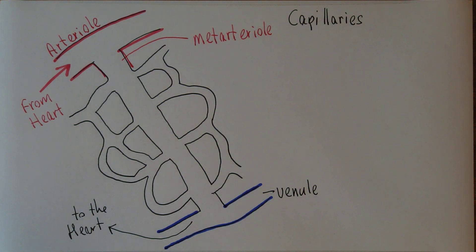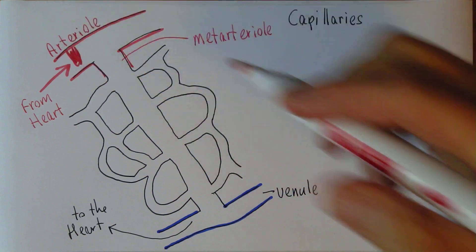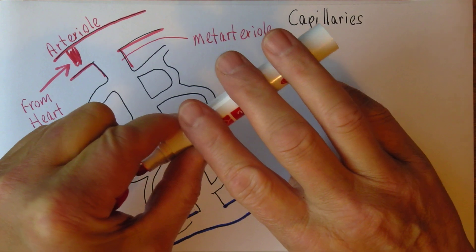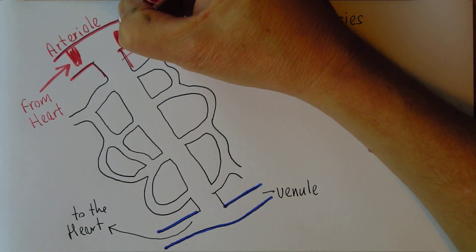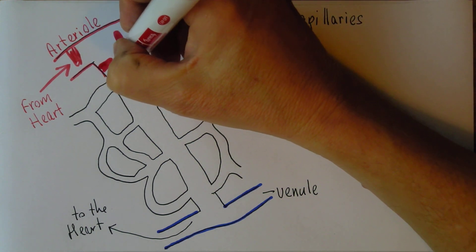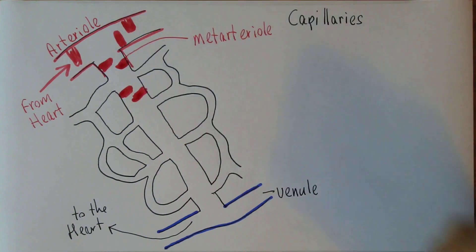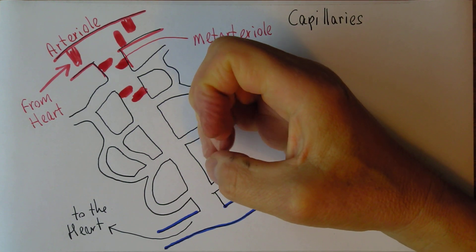The musculature here is quite important because the smooth muscle doesn't go all the way around normally. There are bands of smooth muscle — it's a bit like fingers going around the vessel — and it's the same in the metarteriole.